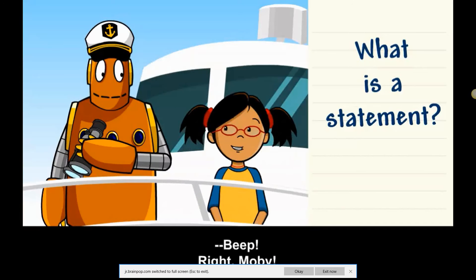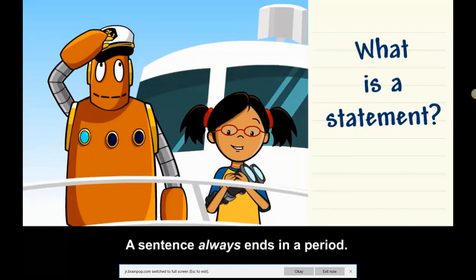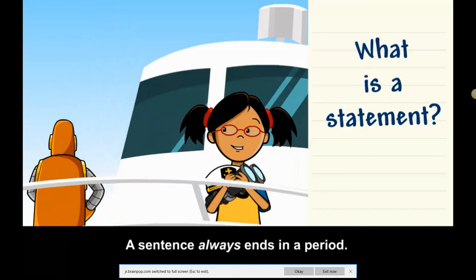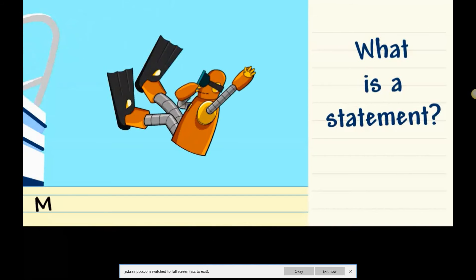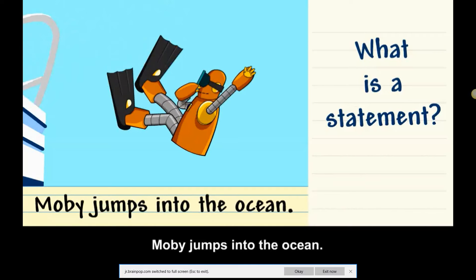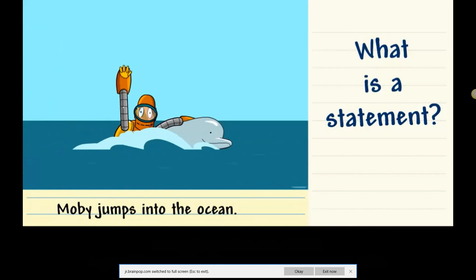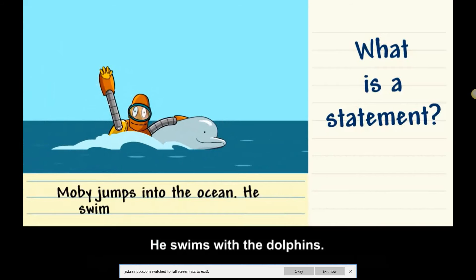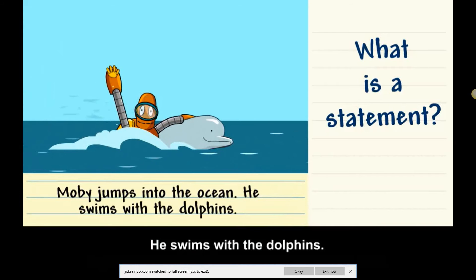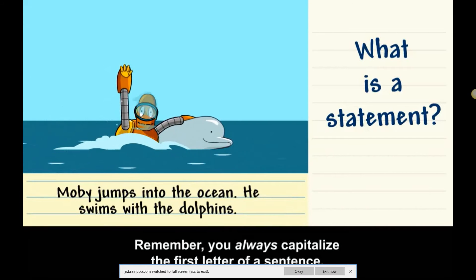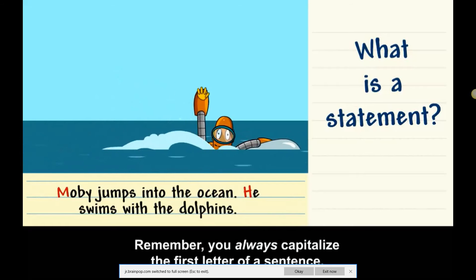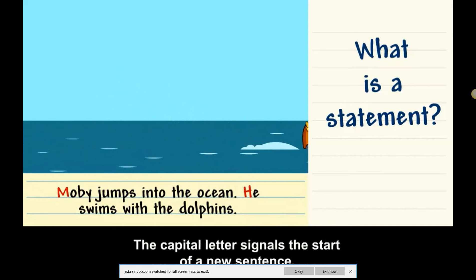Right, Moby. A sentence always ends in a period. Moby jumps into the ocean. A period signals the end of a thought or an idea. He swims with the dolphins. Remember, you always capitalize the first letter of a sentence. The capital letter signals the start of a new sentence.